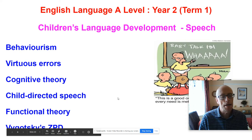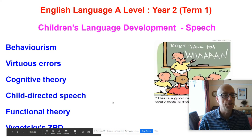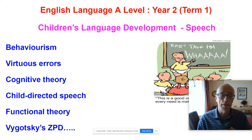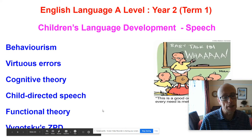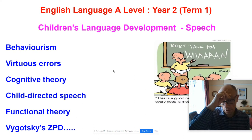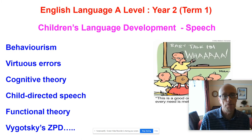We look at functional theory, developed by Michael Halliday, who says the important thing when looking at children's language is to look at what children are trying to do with their language, i.e. the purposes and functions behind it. And we've even got the Russian linguist Vygotsky, who comes up with his zone of proximal development. This underlines the fact that in the second year, there's a whole load of knowledge that you need to be demonstrating.